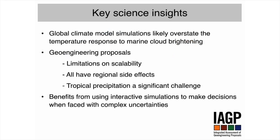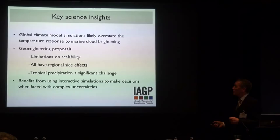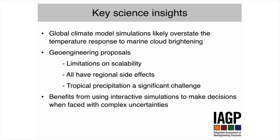To summarise the key science insights: using marine cloud brightening as an example, we looked into some of the detail and how well it's represented in climate models and found that for the three cases we looked at, the climate models are likely overstating the impact of the geoengineering. For our global scale modelling, we found regional differences in temperature — you're going to get inequalities even if your global mean changes according to your target. And it would appear almost unavoidable to prevent side effects like changes in precipitation. On a more positive note, we see a great opportunity to gain benefit in future from more interactive simulations, akin to what we were doing with the Arctic sea ice.